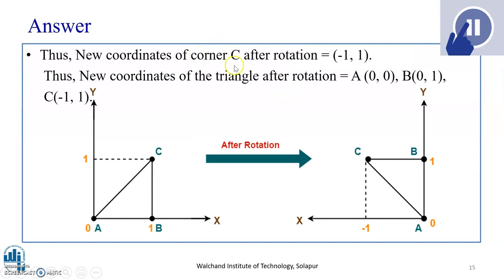Thus, the new coordinates of corner C, that is this initial line after rotation are: 0, 0, B is 0, 1, and C is minus 1, 1. This can be diagrammatically represented as shown here.